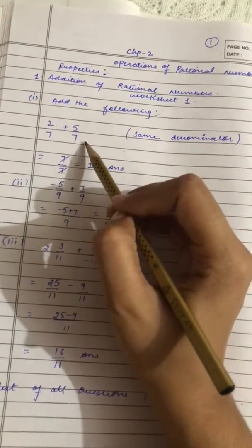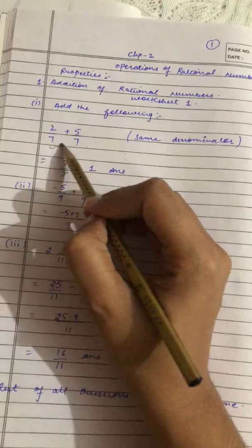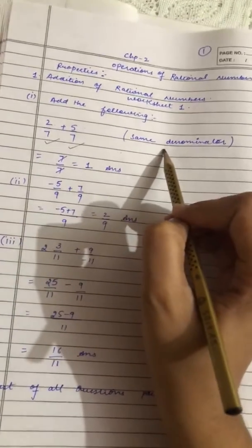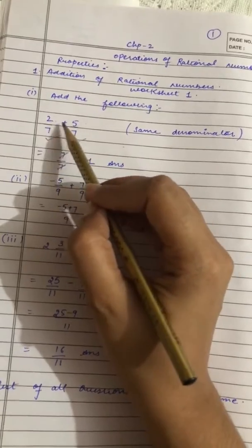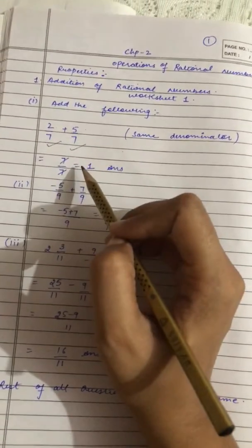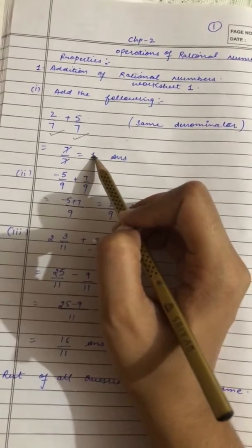2 by 7, 5 by 7. If you have the denominator same here, we will just add numerators. 2 plus 5 is 7. 7 by 7 is 1.